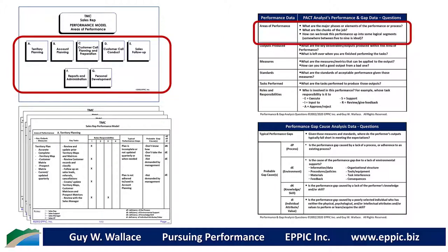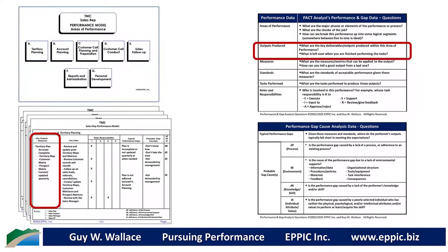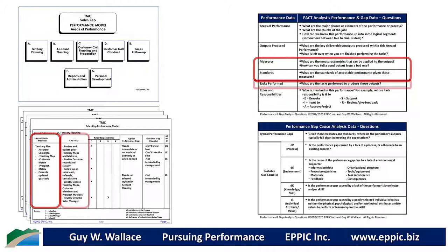The areas of performance are captured on one particular chart — a flip chart page, or an online screen if you're doing this virtually. Then you can identify what are the outputs produced, what are the measures per output, and what are the standards per measure. My experience suggests that most measures that master performers can identify don't have particular standards — they vary tremendously, so I don't often capture standards. Next, what tasks are performed per output? I call those two data sets the output-task cluster: the output, measures, and tasks all together as one cohesive unit.